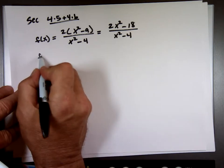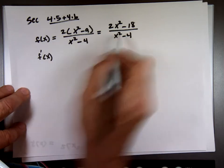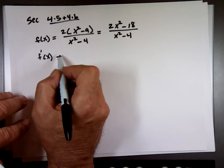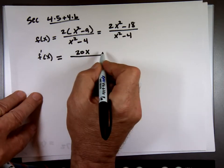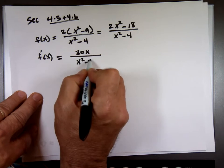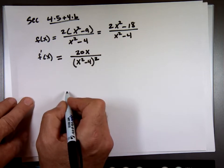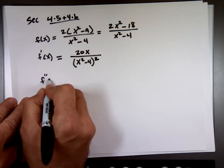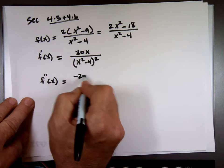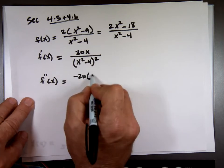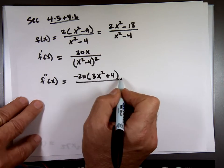That means I need the first derivative, and that's the quotient rule: this times the derivative of that, minus the top times the derivative of the bottom, over the bottom squared. I'm going to save some time and just put the answer there. And while I'm at it, I'll put the second derivative — the quotient rule again. I'm assuming we all know how to take the derivative now.